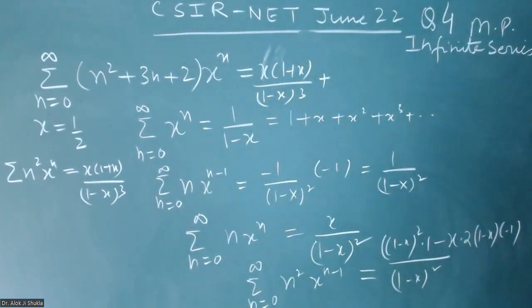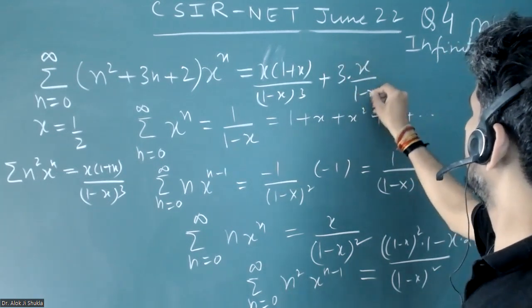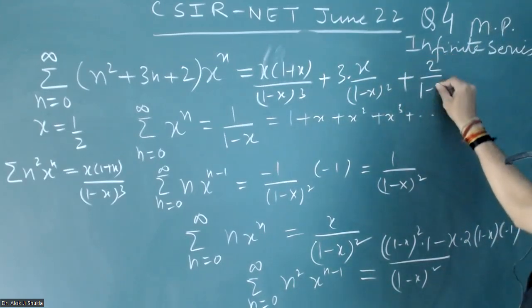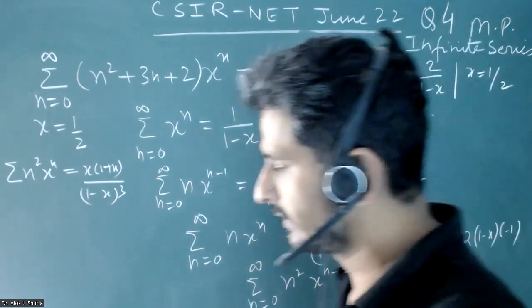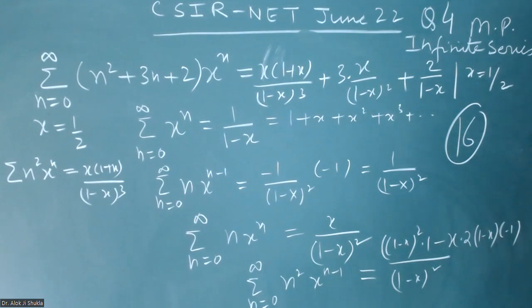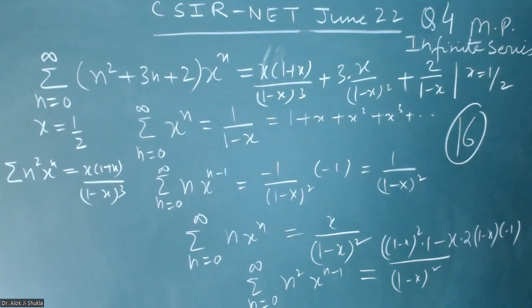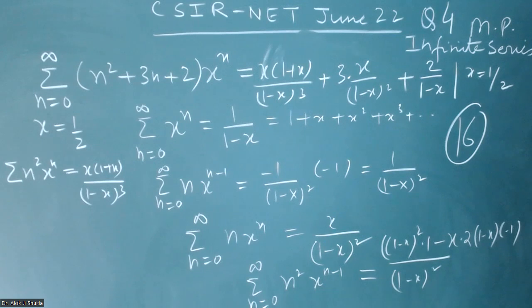Adding 2 times xⁿ, which is 2·(1/(1-x)), and putting x equal to 1/2 as required, you will get the summation equal to 16. The key idea is: starting from summation xⁿ, take the derivative and multiply by x to keep xⁿ rather than x^(n-1). Thank you.